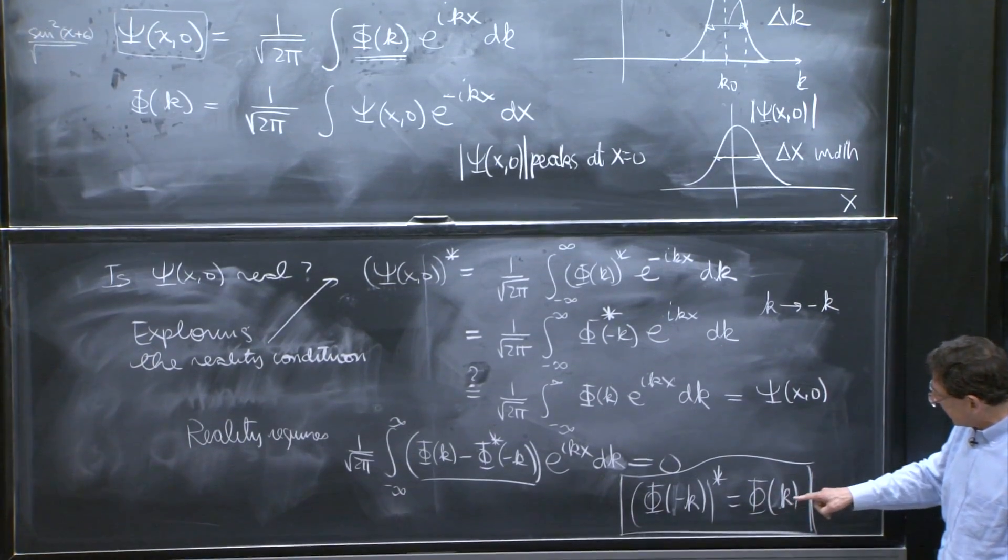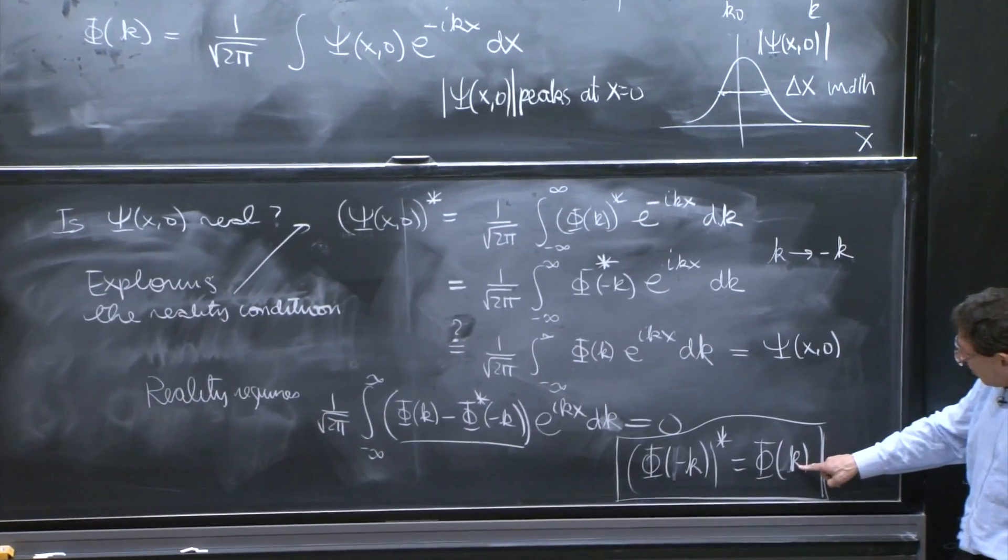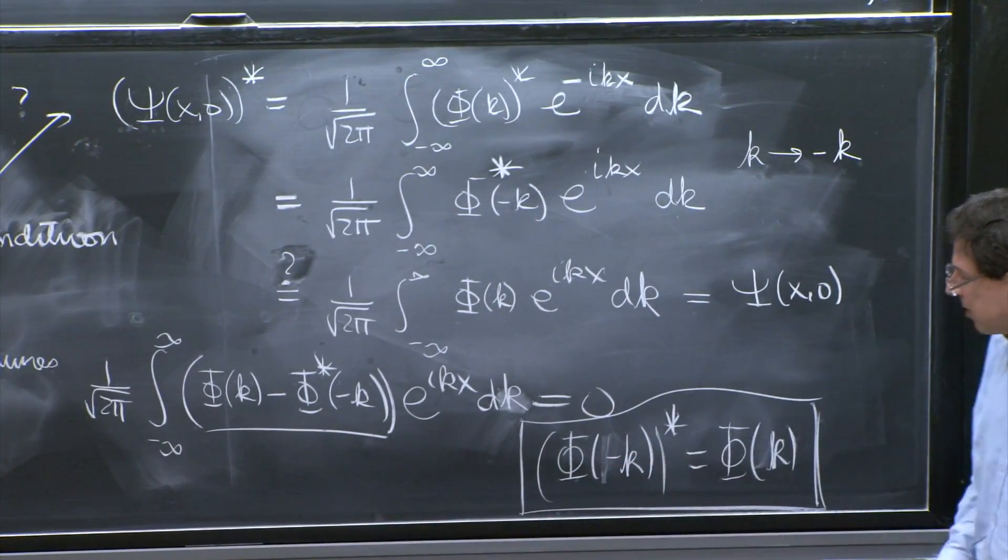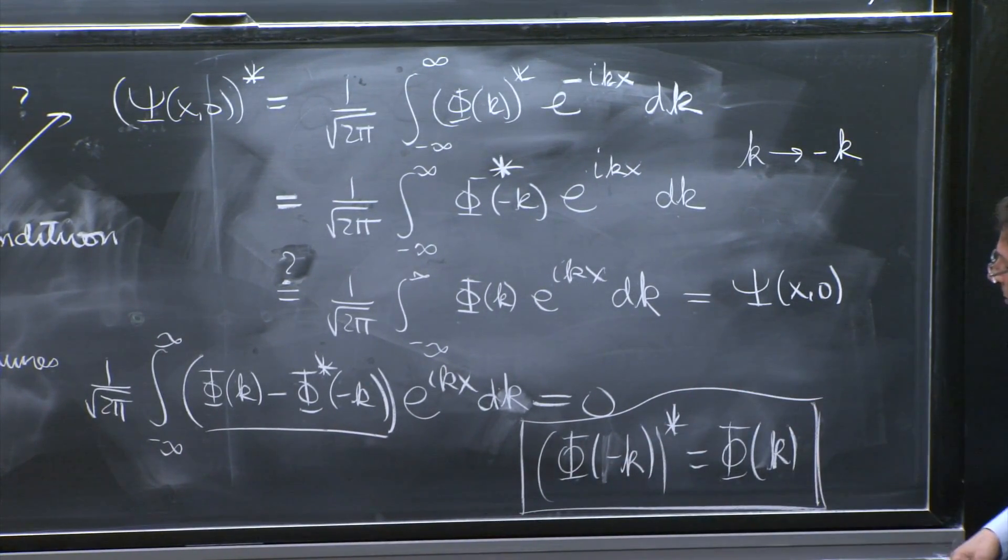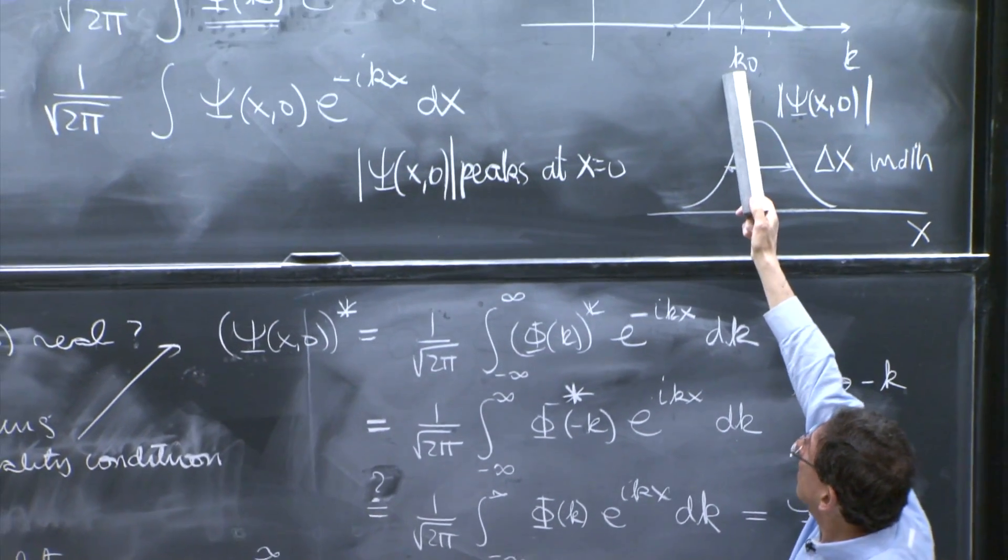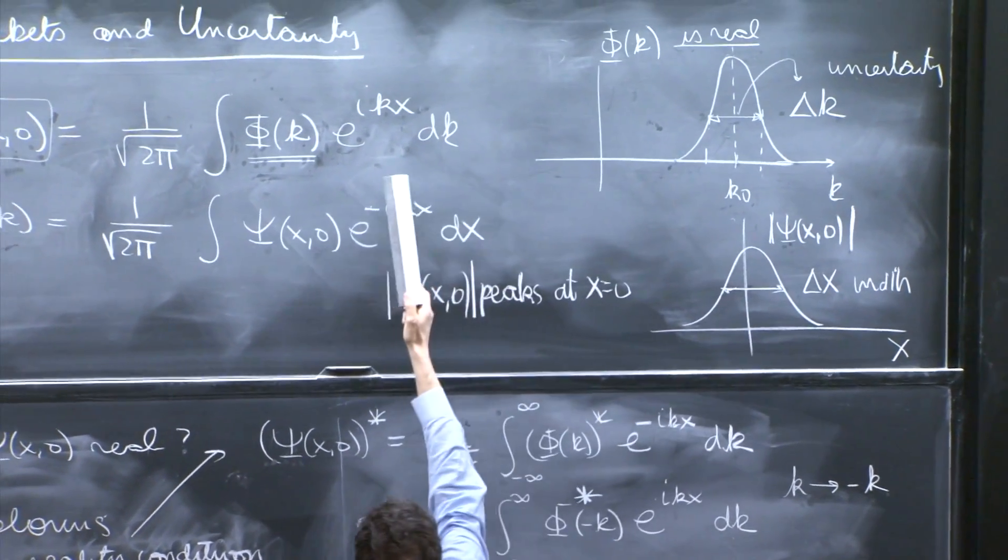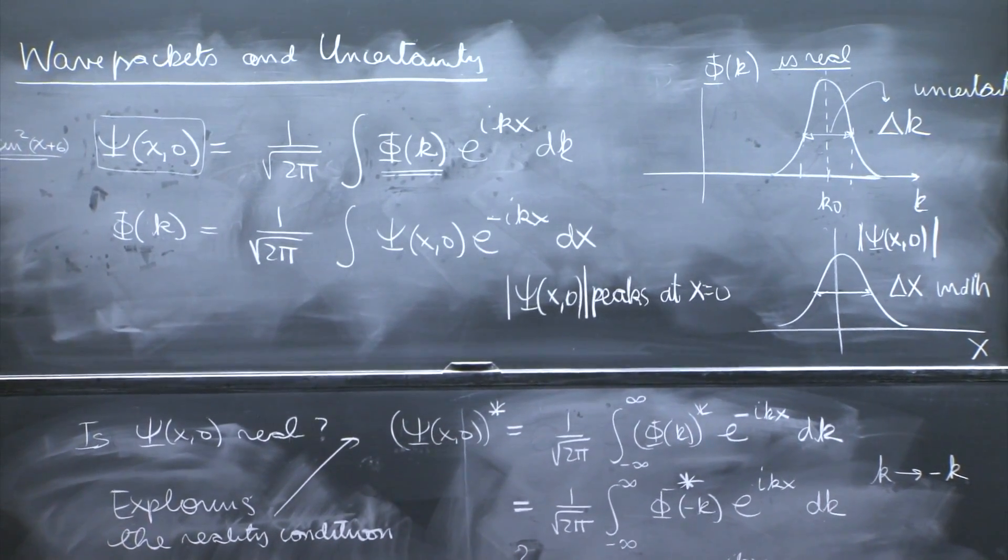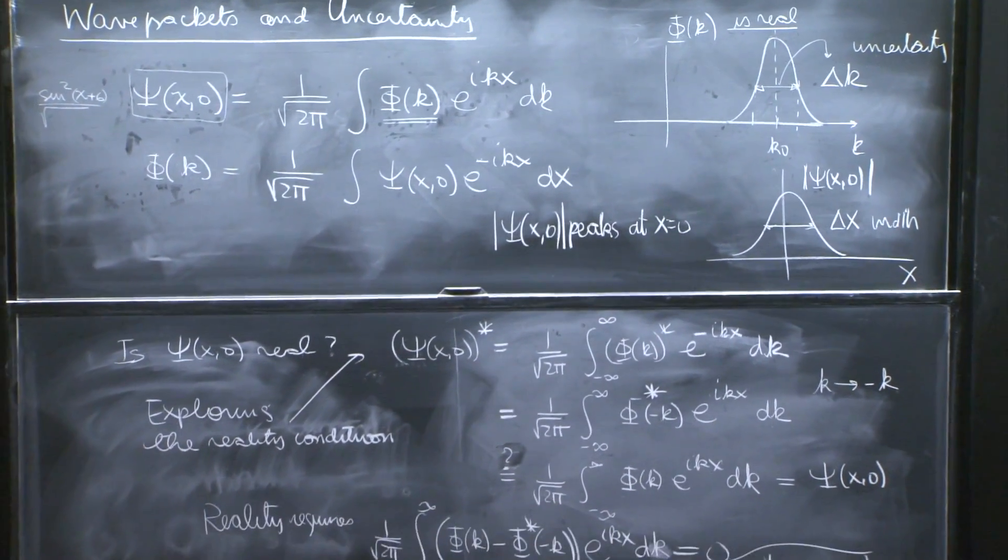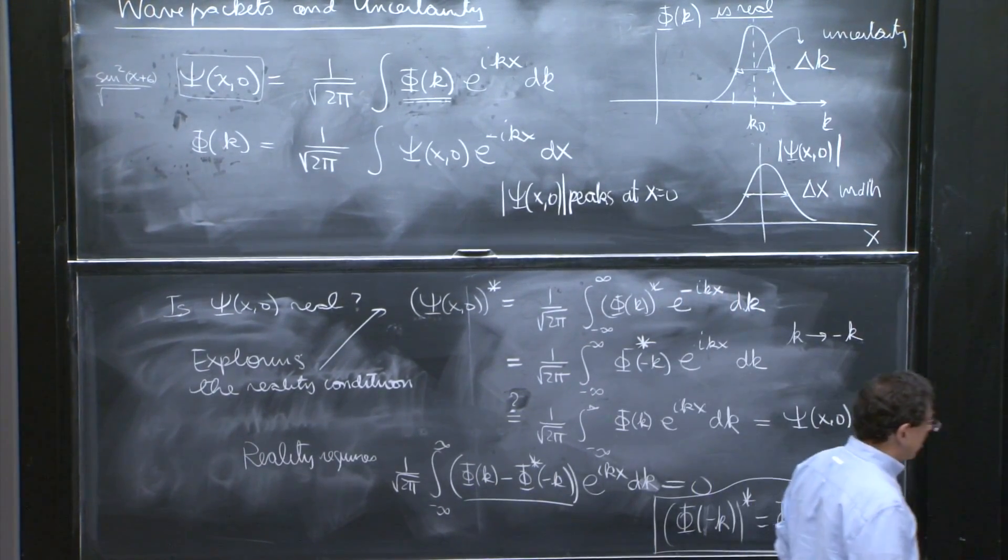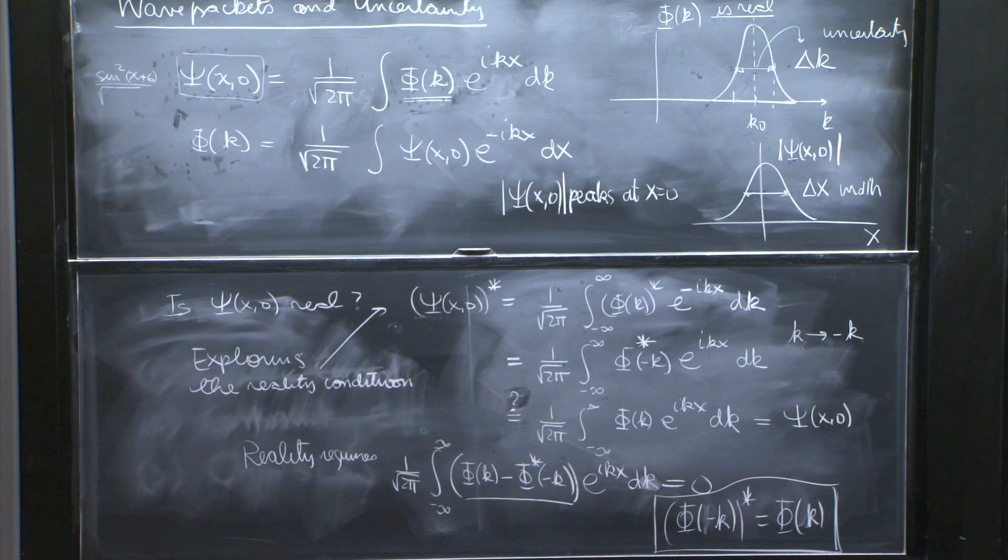If you have phi that exists for some value of k, it should also exist for the value of minus k, and in fact should be the complex conjugate of the other value. But here, you have some phi's of k and no phi's at minus k. So the phi that we wrote above doesn't satisfy this condition. And therefore, psi is not real. And it all makes sense.